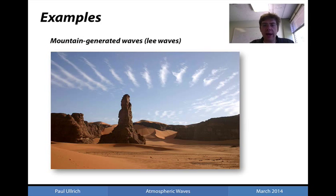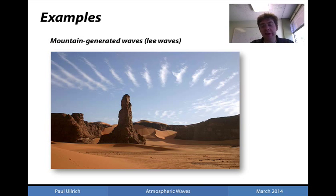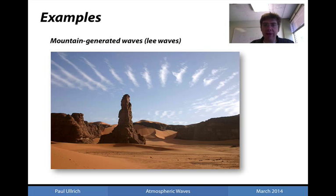We also have here another view of mountain-generated waves — lee waves — shown via atmospheric oscillations. Here you have basically continuous spacing between individual clouds, which correspond to the spacing between crests of the internal gravity wave. This can then be used in order to measure the wavelength associated with the internal gravity oscillations.